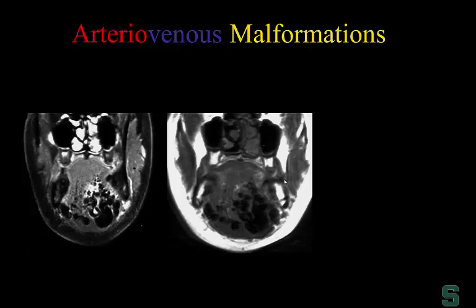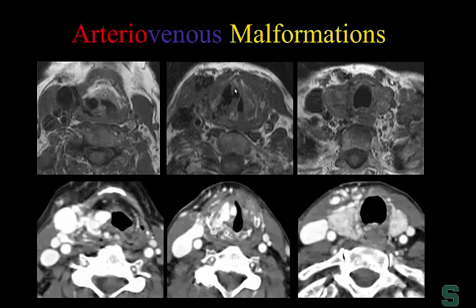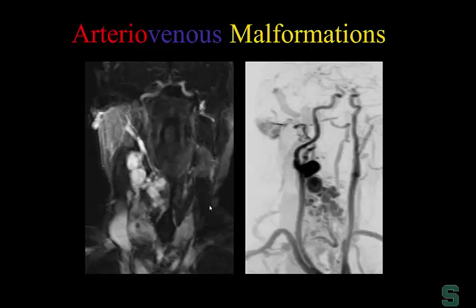Here's an example of an arteriovenous malformation involving the floor of the mouth and larynx. On non-contrast T1-weighted MR you can see flow voids; on CTA there is dense enhancement throughout; and on MRA there are diffuse enhancing lesions involving the larynx.